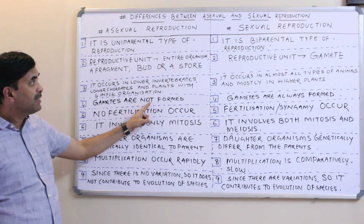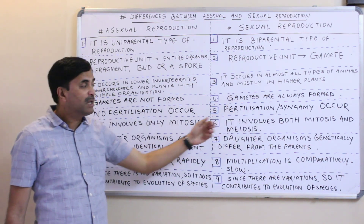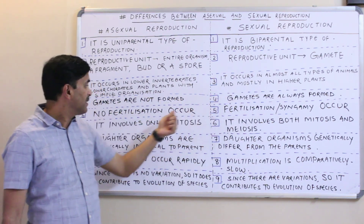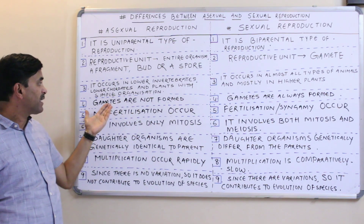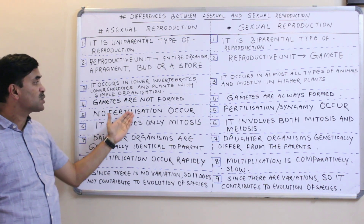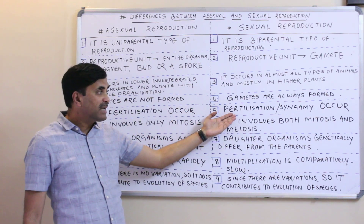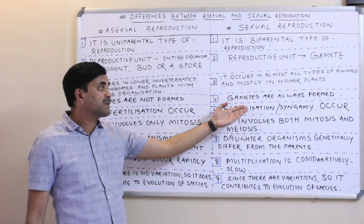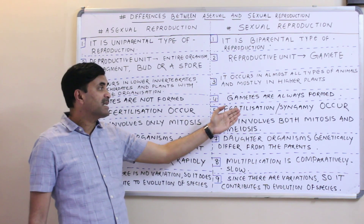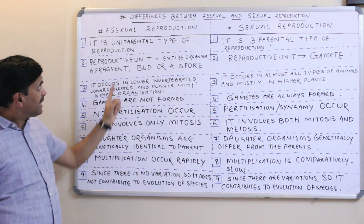In asexual reproduction, gametes are not formed at all. But in sexual reproduction, gametes are always formed. Because no gametes are formed in asexual reproduction, there is no fusion of male and female gametes, and hence no fertilization or syngamy occurs. In sexual reproduction, fertilization — that is, the fusion of gametes or syngamy — does occur.